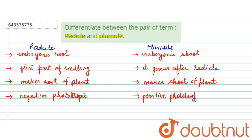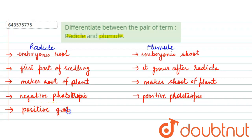Now the last point of difference: your radicle is positively geotropic, meaning it will move towards the earth. On the other hand, the plumule is negatively geotropic.